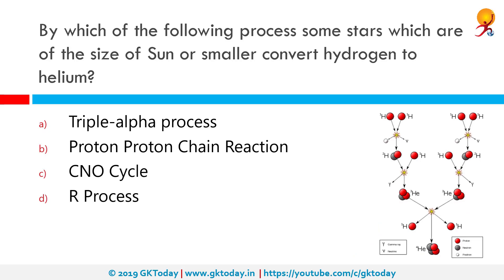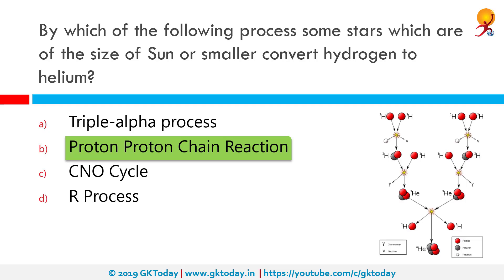By which process do stars of the size of the sun or smaller convert hydrogen to helium? The correct answer is the proton-proton chain reaction. The proton-proton chain reaction is one of two known sets of nuclear fusion reactions by which stars convert hydrogen to helium. It is a branched chain of reactions starting with two protons coming together and yielding deuterium.